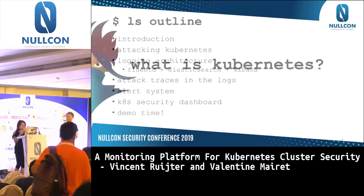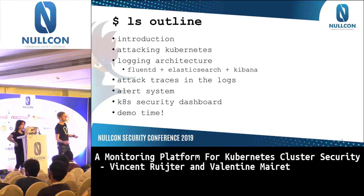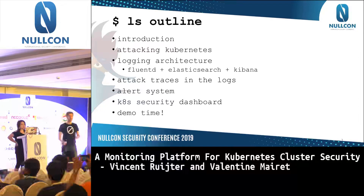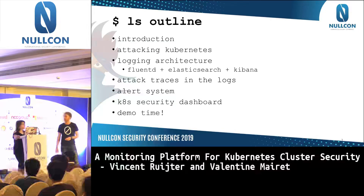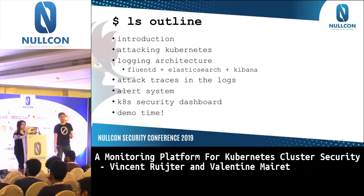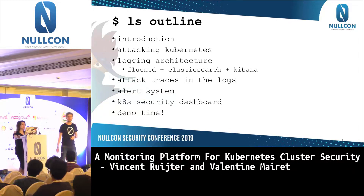The outline of the talk: first we do a little bit of introduction, then there's a lot of Kubernetes nomenclature we will explain, then we'll talk about the several attacks that are possible in Kubernetes. We'll show you our logging architecture — basically how to use Fluentd, Elasticsearch, and Kibana — then we'll talk about the traces you can see in the logs when we do certain attacks, and then we'll show you the alert system, the security dashboard, and do some demos. No live demos because some networking stuff was hard to mimic, so we have made some recordings.